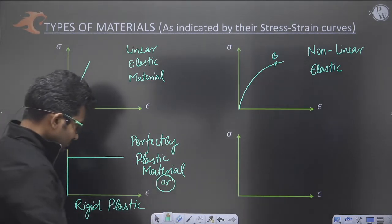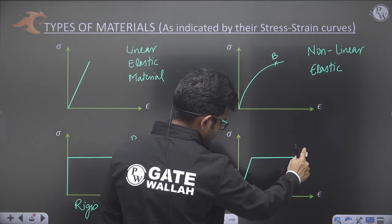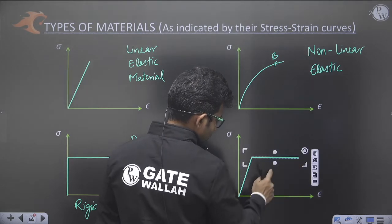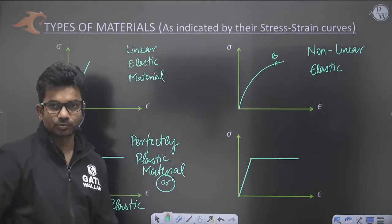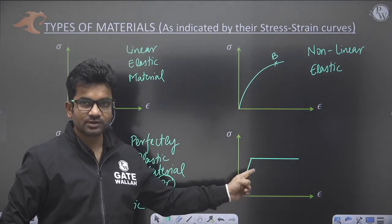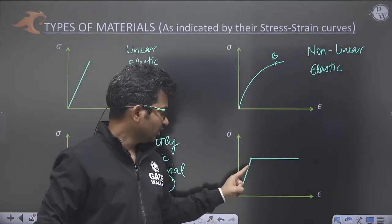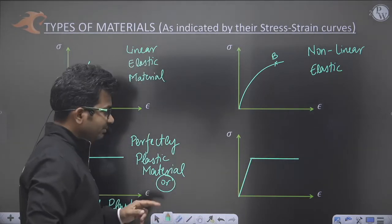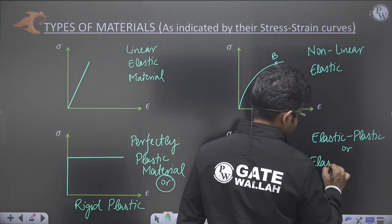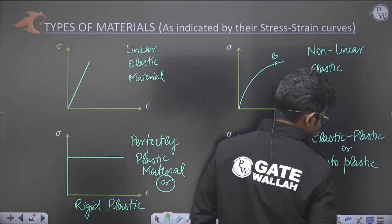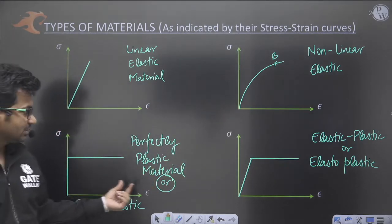The next behavior is elasto-plastic. In one region it shows perfectly elastic or linear elastic behavior, and in the next region it shows perfectly plastic behavior. So it is elastic as well as plastic, and this type of behavior is called elastic-plastic or elasto-plastic.